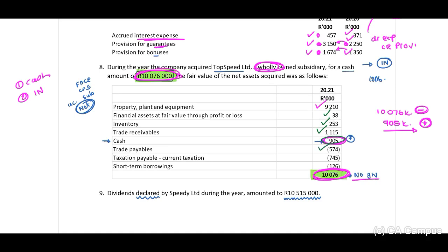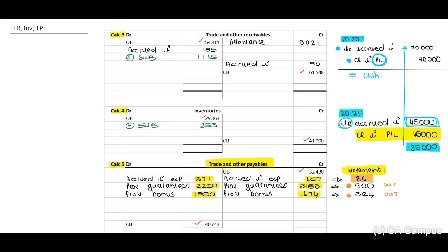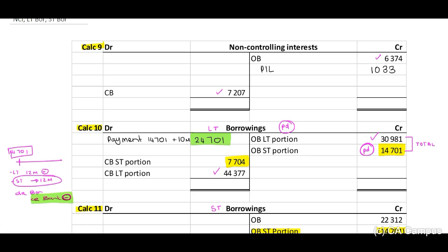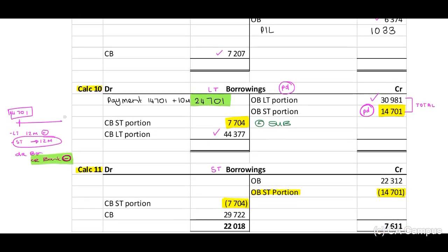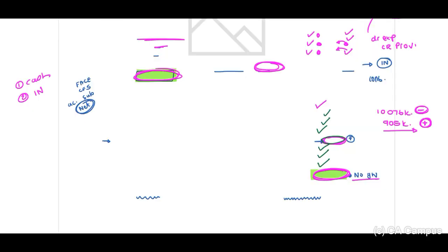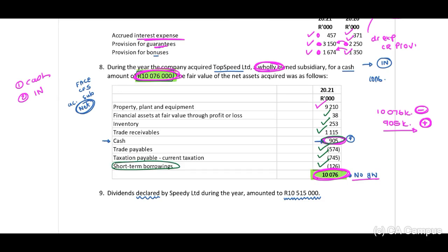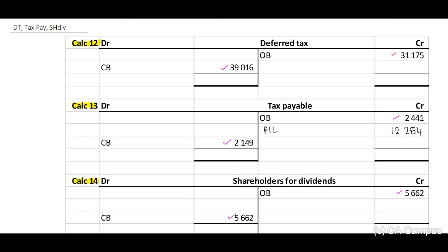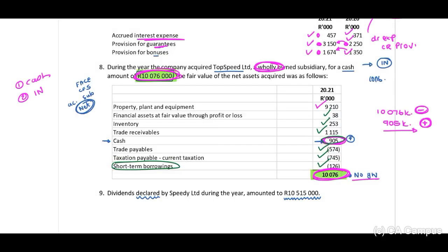We have included our cash portion for trade payables: 574, and our taxation and short-term borrowings. Let's transfer those — trade payables on the credit side, plus the subsidiary: 5,574. Then for our borrowings — long-term borrowings: 126, plus the subsidiary: 745.